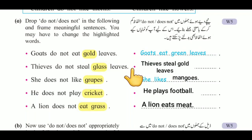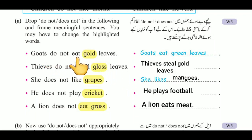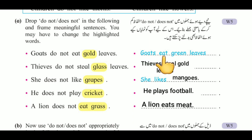Let's look at the solutions. For question A, the first sentence: 'Goats do not eat gold leaves' — we made it 'Goats eat green leaves.' یہاں پر goats eat green leaves بنایا گیا ہے۔